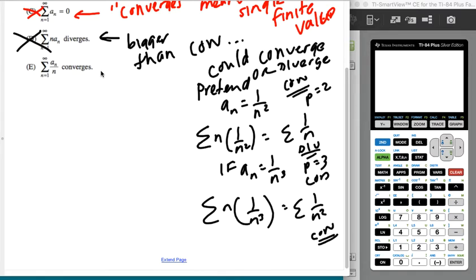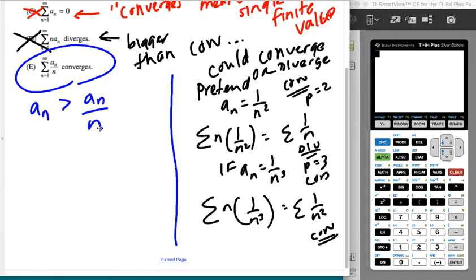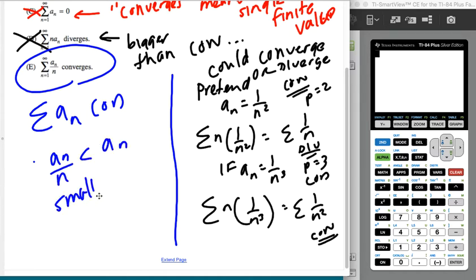It is e by default, but you can kind of see the logic of that because a sub n is going to be bigger than a sub n over n. Let me rewrite it the other way. So we know that this sum converges. And since this thing must be smaller than this thing, smaller than convergent also converges.